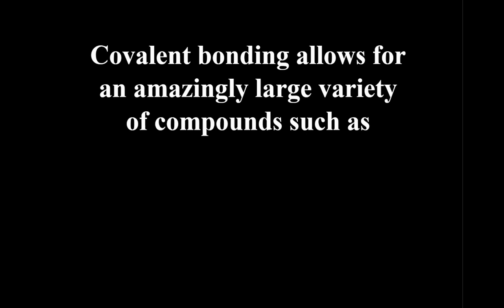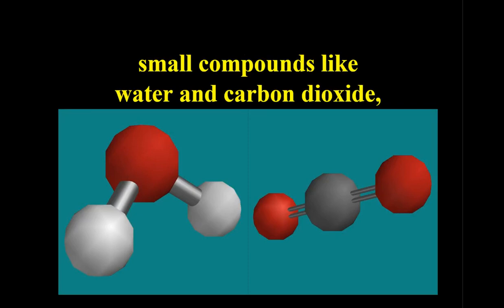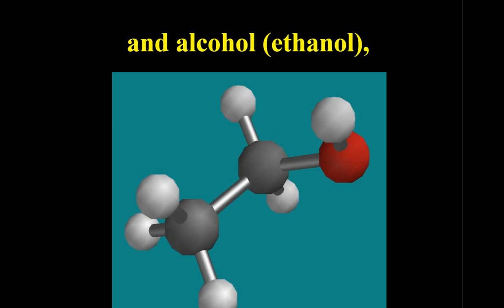Because when you have a covalently bonded compound, an example is carbon. Carbon has four valence electrons. It will form four bonds most of the time. And this just allows for a wide variety of possibilities for bonds. And they can be these huge molecules too. So they can be small molecules like water and carbon dioxide. Those are covalent compounds with only nonmetals in them. This is alcohol or ethanol.